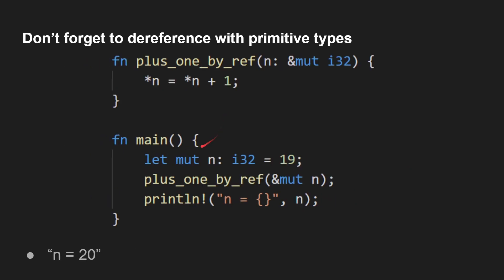You can do exactly the same with primitive types. Here we've got an int32 bit integer, we're calling it 19, and we call a function plus one by reference. We pass in a borrowed version of N — a mutable reference. When using primitive types like integers, you have to dereference. The star here says dereference this — not the pointer to N, but N itself. So star N, what N is pointing to, is equal to whatever N is pointing to plus one. When we come out of that, the borrowing stops and N will be 20. Notice the format: you put ampersand mut before the type going into the function.